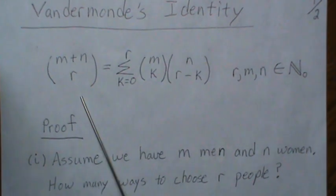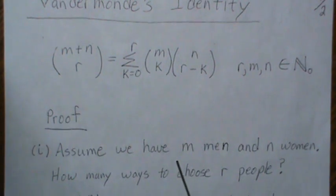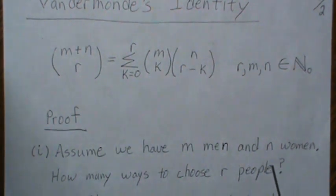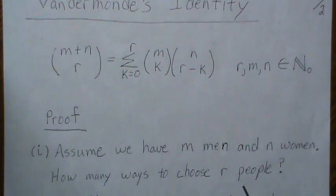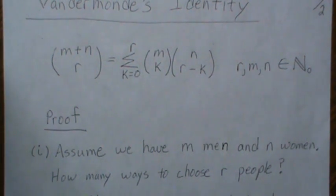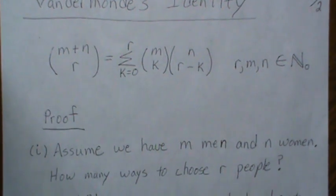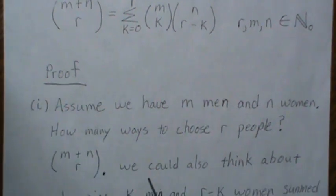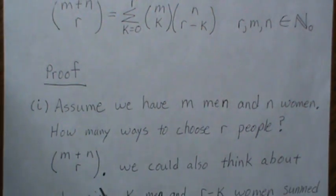For the first proof, assume that we have m men and n women. How many ways can we choose r people from m men and n women? We're not looking at gender specific, it's just m plus n choose r. That's the answer.